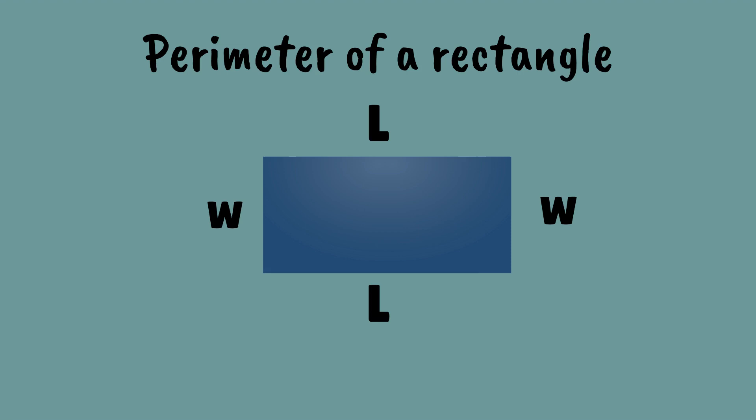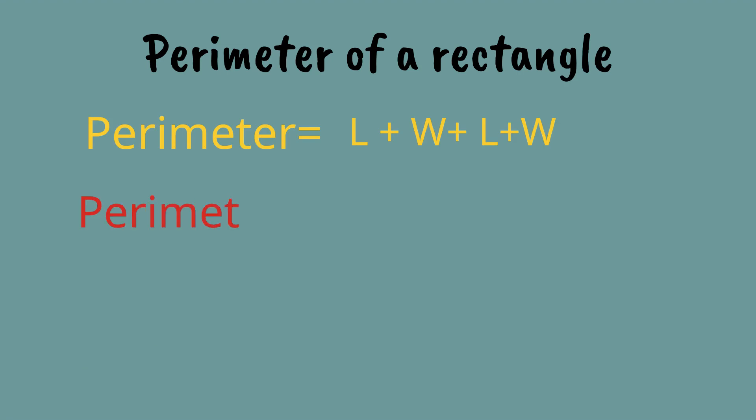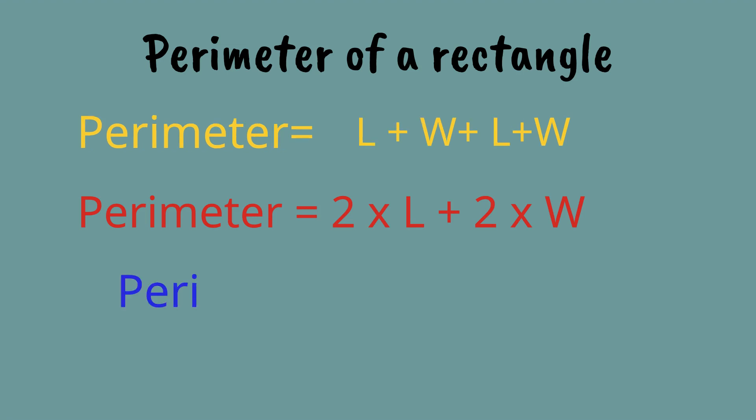If we let L stand for length and W stand for width, the perimeter is L plus W plus L plus W, or another way of putting it is 2 times L plus 2 times W. Some people leave the times out and just simply write it like this: 2L plus 2W, and it all means the same thing.